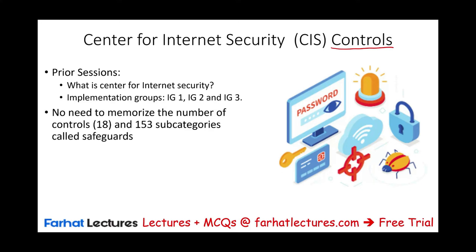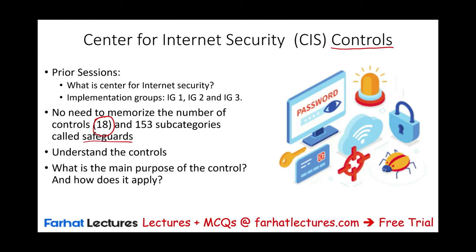There's no need to memorize the number of controls. We're going to have 18 of them, and there are 153 subcategories called safeguards. For each control, I'm going to show you a few safeguards and tell you under which implementation group — IG1, IG2, or IG3 — the safeguards apply. You don't have to memorize them; you just have to understand the controls. What's the main idea, the main purpose of each control, and how does it apply? That's the most important thing.